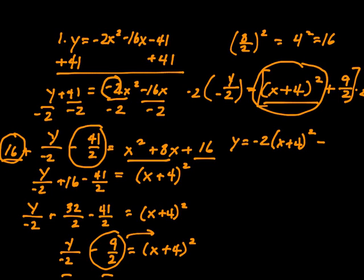And here, when I multiply 9 halves by negative 2, I get negative 9. So that, guys, is my final answer.